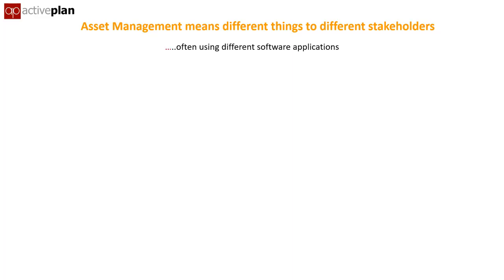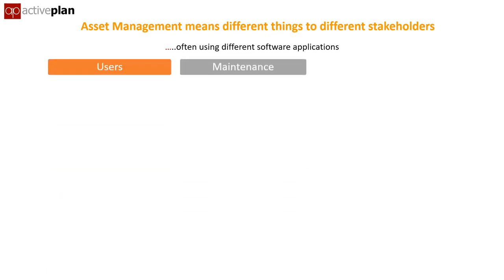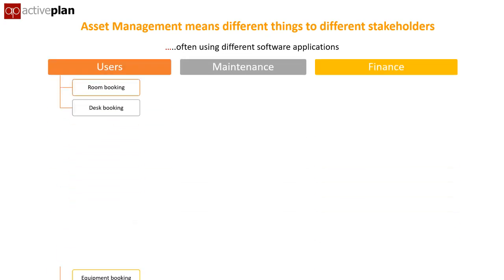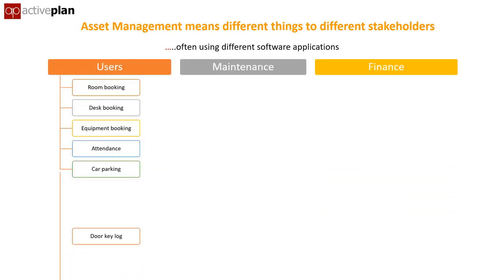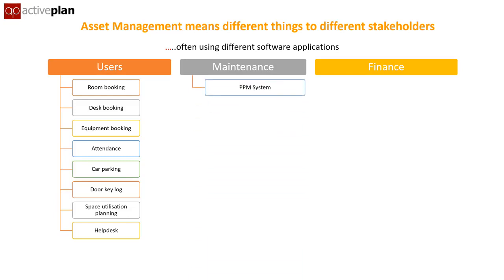What information do asset teams really need? There's no one FM application. People who occupy buildings might use a range of different systems, but no one likes to experience a broken toilet seat. When they report it to the help desk, they want it fixing as soon as possible. But the PPM system is only populated with assets with scheduled works, so information about seat types and fixings is buried in the O&M manual.